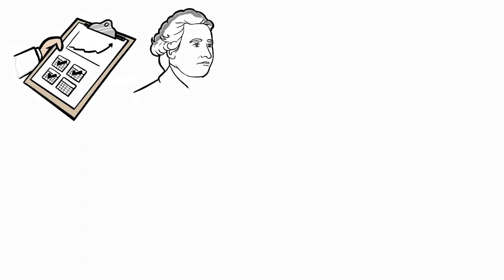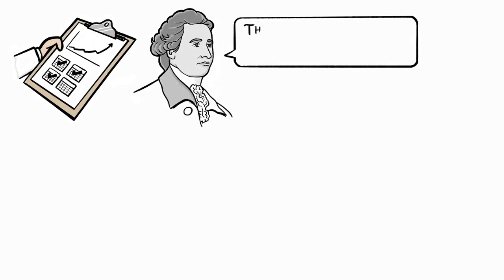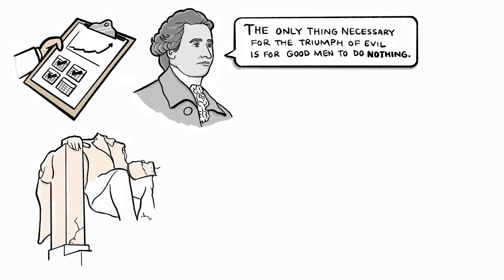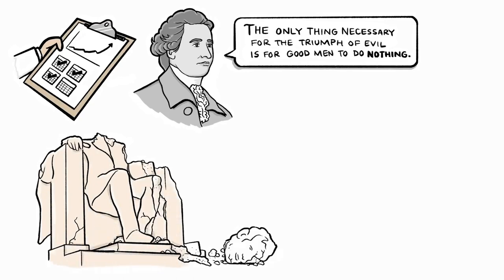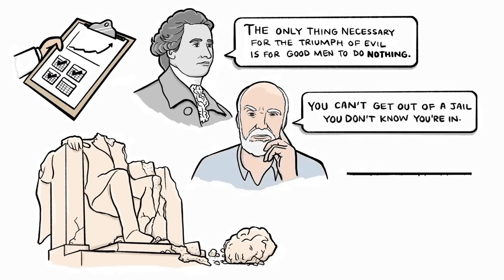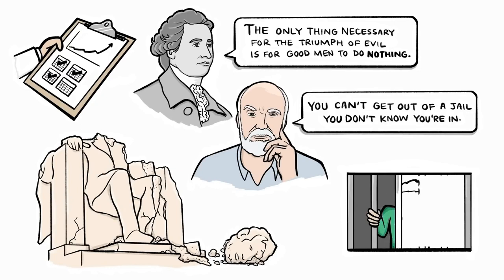18th century statesman Edmund Burke said, The only thing necessary for the triumph of evil is for good men to do nothing. Tyranny progresses slowly, inch by inch, edict by edict, mandate by mandate, each one chipping away at liberty and freedom until nothing of what we formerly took for granted remains. Philosopher Ram Dass tells us that you can't get out of a jail you don't know you're in. It's time to see that the jail of compliance and obedience we're being led to believe is normal and just is neither.